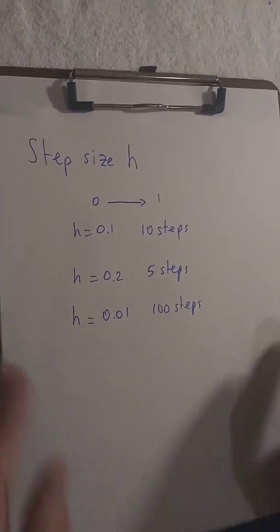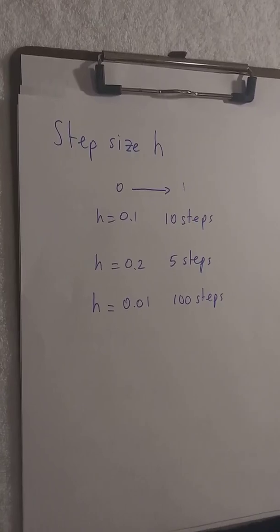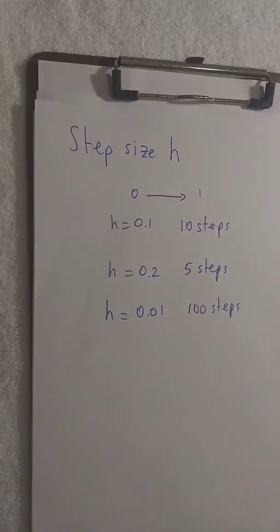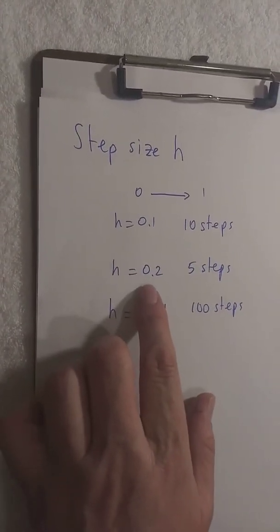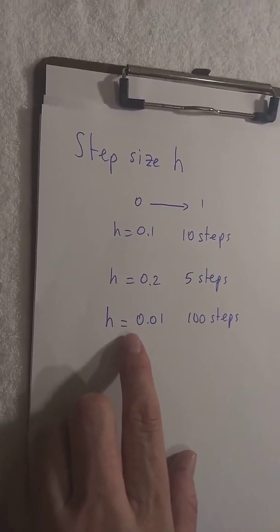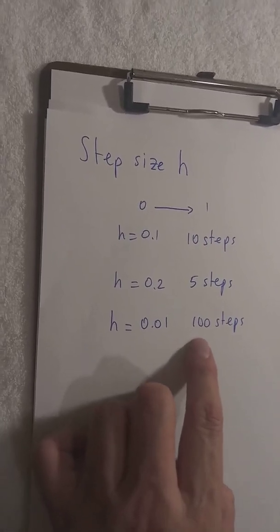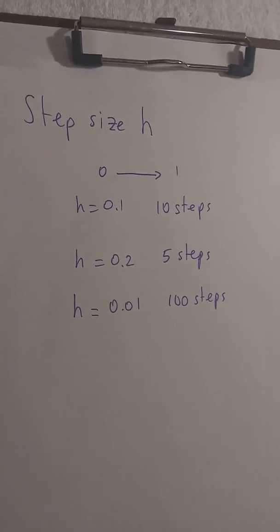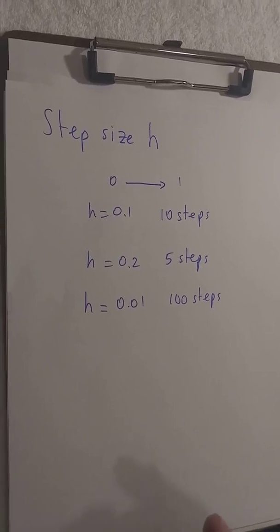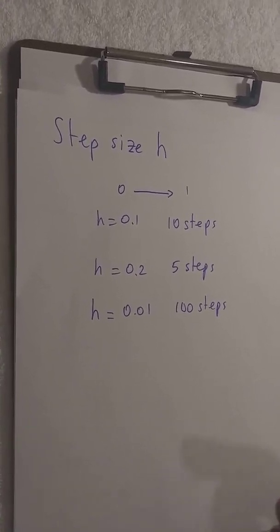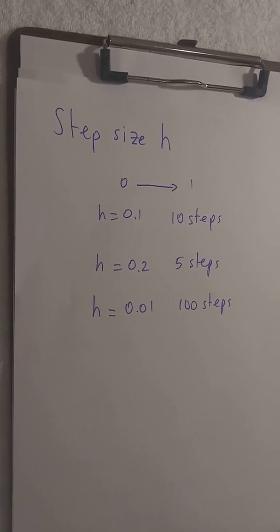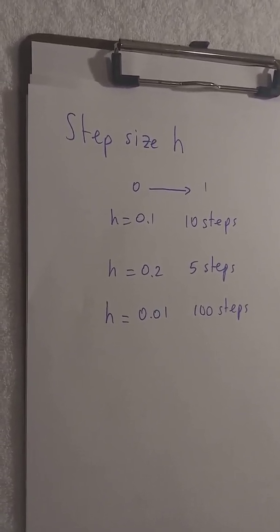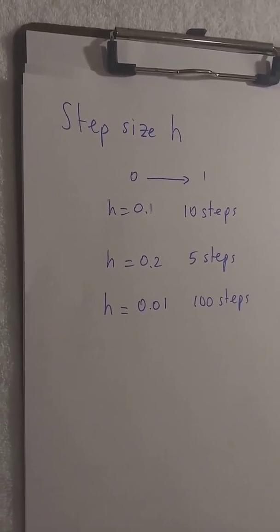For the step size — step size is very important. We picked a step size of 0.1 and took 10 steps to get the value of y at x equals 1. If we had picked 0.2, we would need 5 steps. But if we had picked 0.01, we would need 100 steps. The smaller the step size, the more steps you take, but the better the value you get because you're doing more calculations. There should be some kind of happy medium — a good step size that gives you a good desired accuracy.